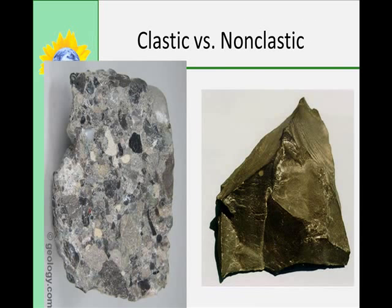Clastic sedimentary rocks are formed from multiple mineral types and may have a variety of grain sizes, like the one you see on the left hand side. Non-clastic sedimentary rocks are also called chemical sedimentary rocks and are formed from only one type of chemical composition.